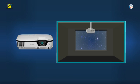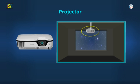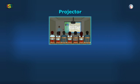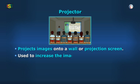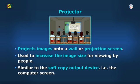Moving further, see this figure. It is a projector. I saw this in a seminar hall of my school where students used to give presentations. A projector simply projects images onto a wall or projection screen. They are typically used to increase the image size for viewing by people. It is similar to the soft copy output device, that is the computer screen. Projector is really useful.